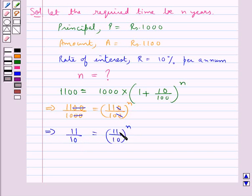That is, we have 11 upon 10 to the power 1 is equal to 11 upon 10 to the power N. So from here we get N is equal to 1.